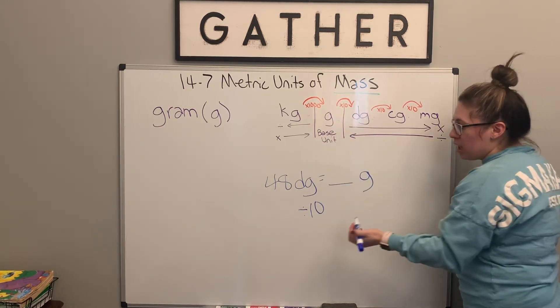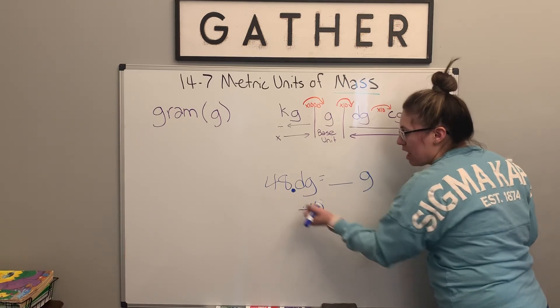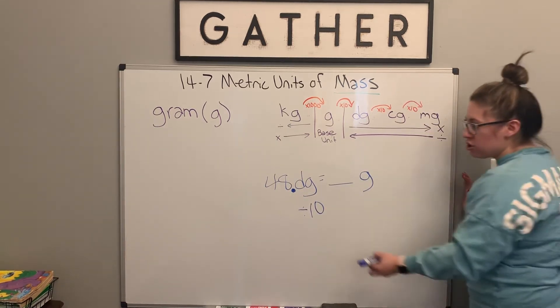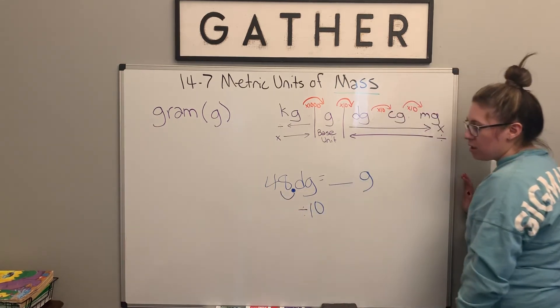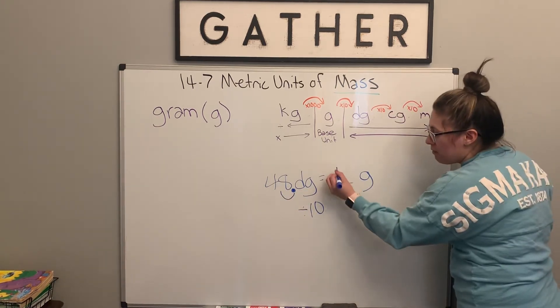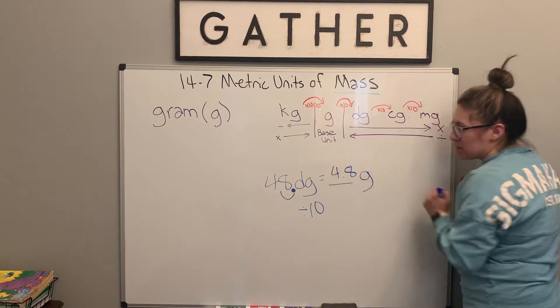So we're only going over 10 because we just have that one place to go over. So again, we have that imaginary decimal point here at the end of our whole number and we can just move it one place because we only have one zero there. And so now we have 4.8 grams.